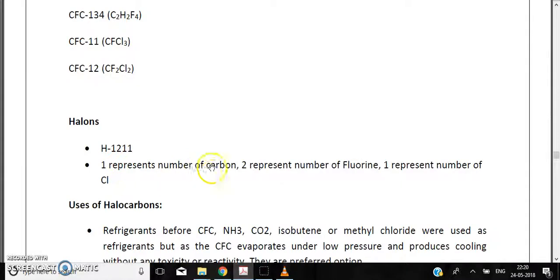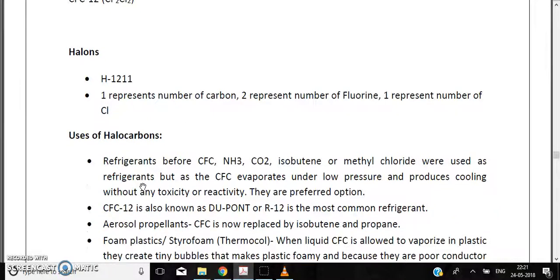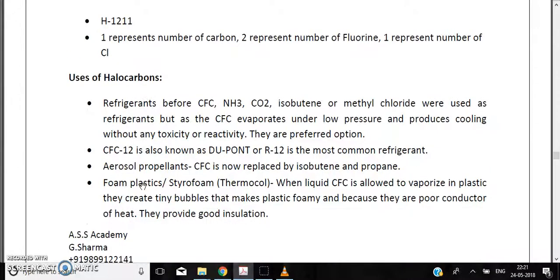In the case of halons, let us suppose we have a number like halon 1211. The first digit will indicate the number of carbons, second is number of fluorines, third is number of chlorines, and fourth is number of bromines. So the formula here will be CF2ClBr.